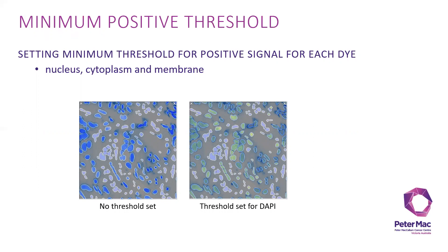Nucleus usually is for DAPI, cytoplasm you can use again, and membrane depending on the marker you're trying to set the threshold on. For this specific example, I use DAPI. When there's no threshold set, it's light blue purplish color, and when it's set for DAPI, it turns yellow.